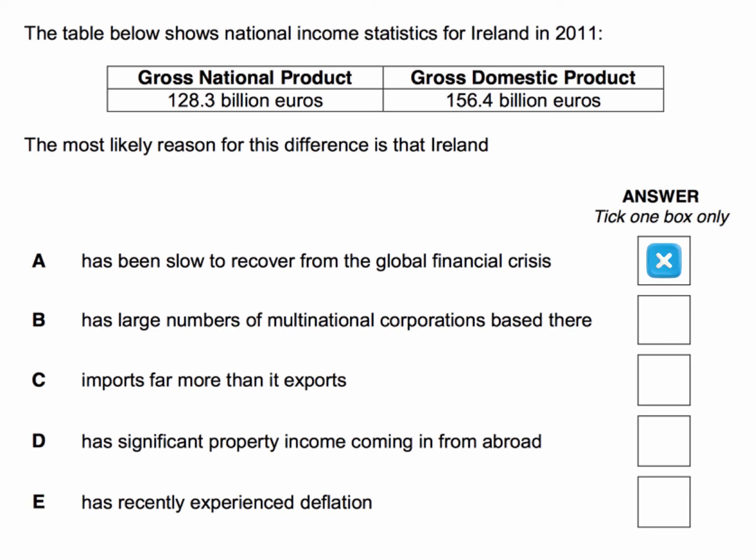What about option A? Well, A doesn't really answer the question. It's got nothing to do with the global financial crisis. It doesn't tell us what the rate of growth is — we're just given the level of GDP and the level of GNP.